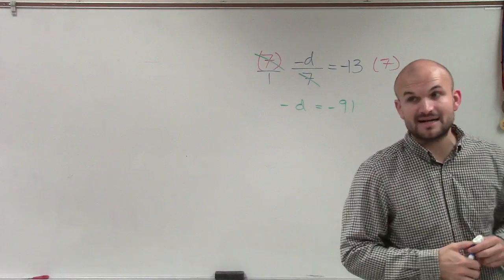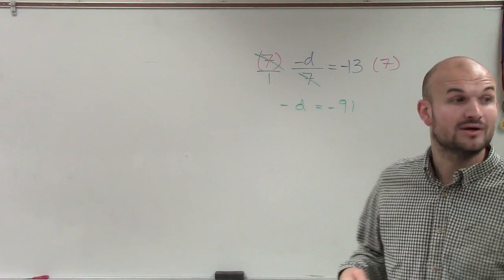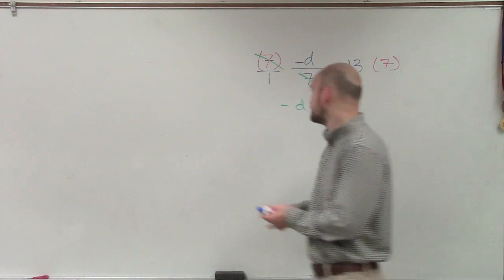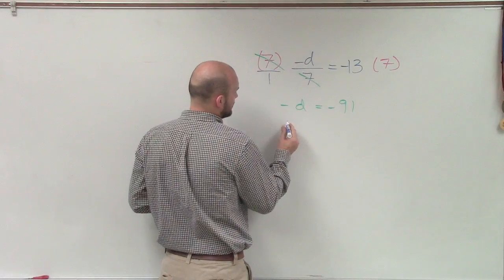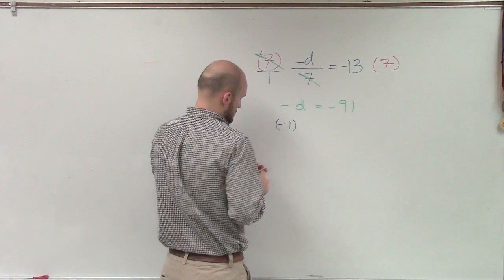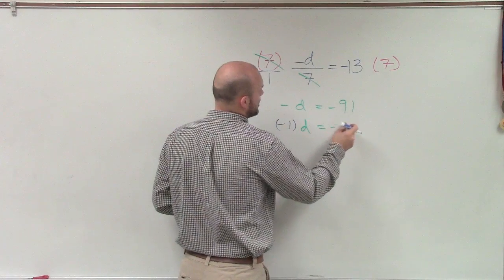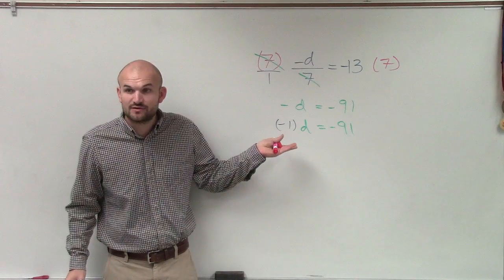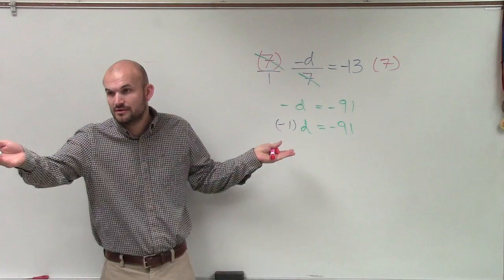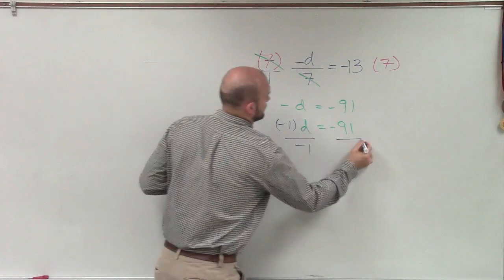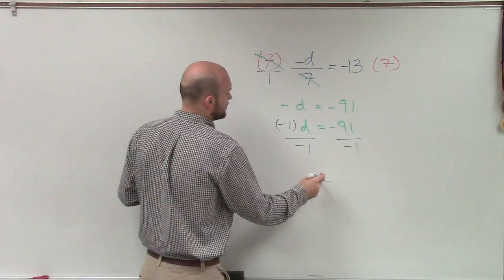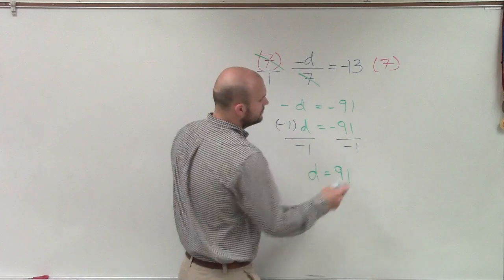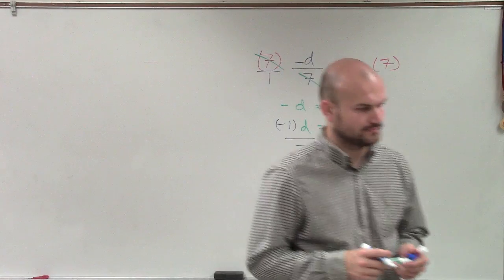Now I've solved for d, but is my d positive? No, it's negative. So I need to get rid of the negative. So really, what's happening is this d is being multiplied by negative 1. That's what the negative symbol represents. So I need to undo multiplication of negative 1, so I can divide by negative 1. Therefore, d equals, well, negative 91 divided by negative 1 is going to be a positive 91.